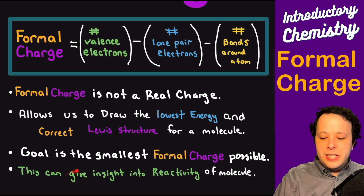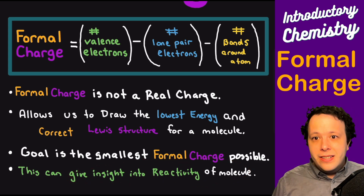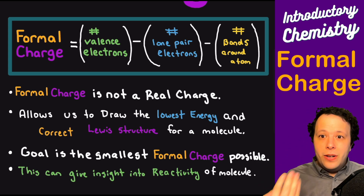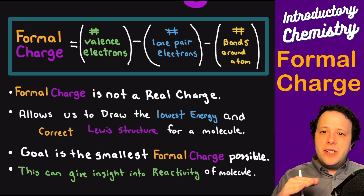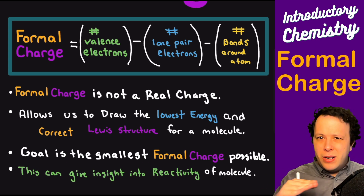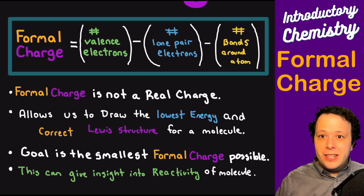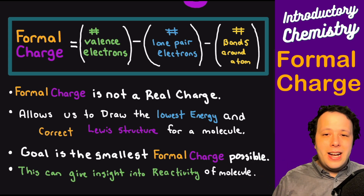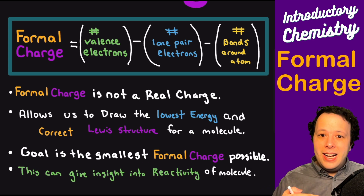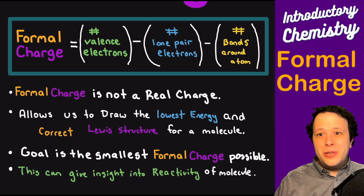The big thing is that this helps give chemists and biologists insight into chemical reactivity. If something has a negative or positive charge, or a lonely electron, this gives us some insight on what is happening in the molecule. This pairs very well with octet rule violations or exceptions, which will be in a follow-up video. So let's take a look at a bunch of different examples of how we can use this to write Lewis structures.